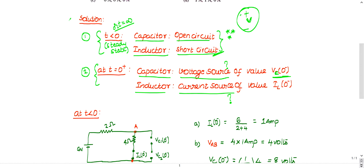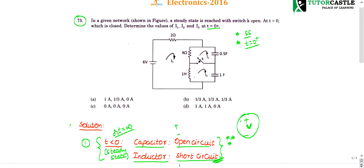During steady state, when you open the capacitor you find the voltage at those terminals — that voltage is useful at the t equal to 0 plus instant. The inductor is replaced with a current source whose value equals the current flowing through the short circuit — I_L of 0 minus — the current computed through the inductor when it is short-circuited.